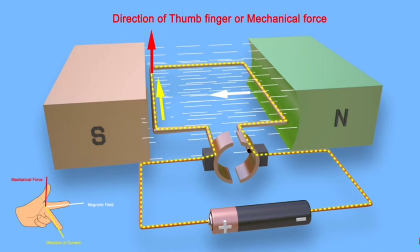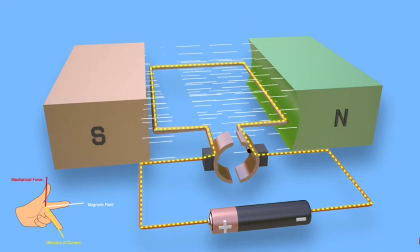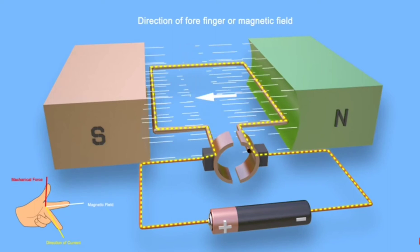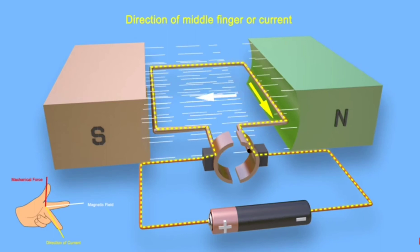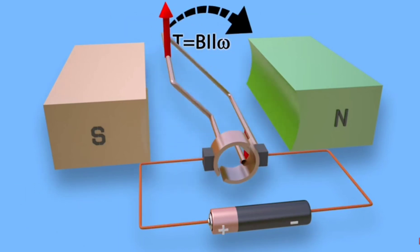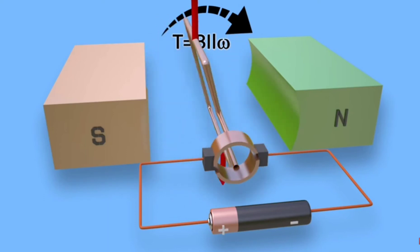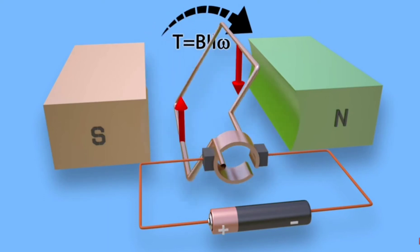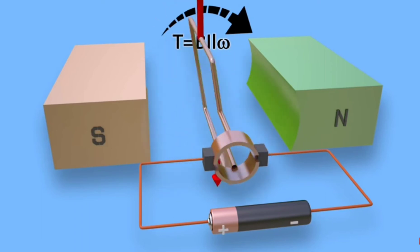Due to this upward and downward force on the turn, torque is produced. The turn rotates in a clockwise direction as shown.